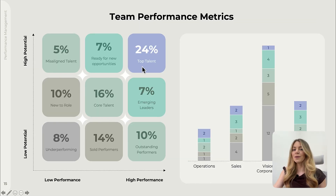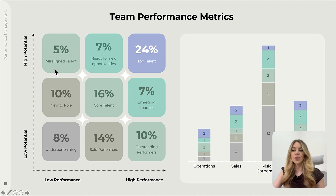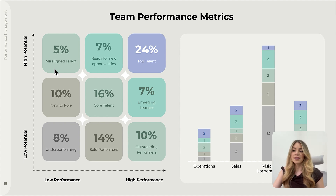Another useful tool is the team performance matrix. It plots employees based on their potential and performance, helping to identify high performers and those who might benefit from reassignment to better utilize their talents. For example, if someone has really high potential but low performance, that probably means their talent isn't being used, so perhaps they should be assigned to different projects. The team performance matrix allows managers to tailor their development strategies and delegate tasks accordingly, enhancing individual development and optimizing team dynamics.